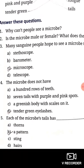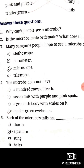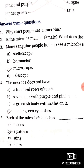Question four: For which of the following does the microbe NOT have — option A: a hundred rows of teeth, B: seven tails with purple and pink spots, C: a greenish body with scales on it, D: tender green eyelashes. The right answer is D — tender green eyelashes. The microbe does not have tender green eyelashes.